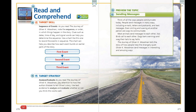Our target strategy is to analyze or evaluate. As you read, pay attention to how the author chooses to tell Oliver's story. Use text evidence to analyze and evaluate whether or not you think this works well.